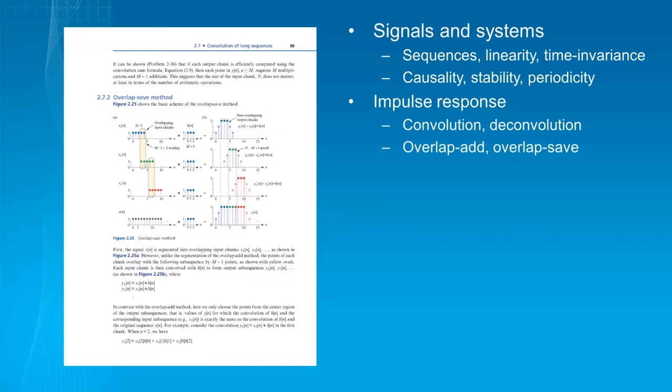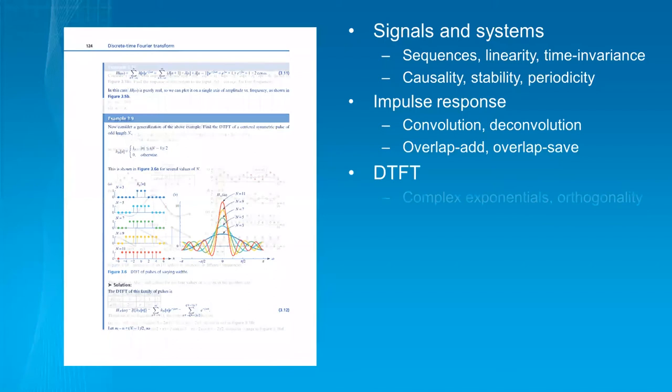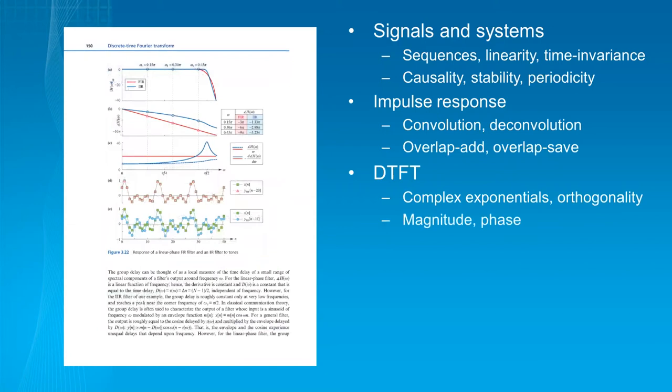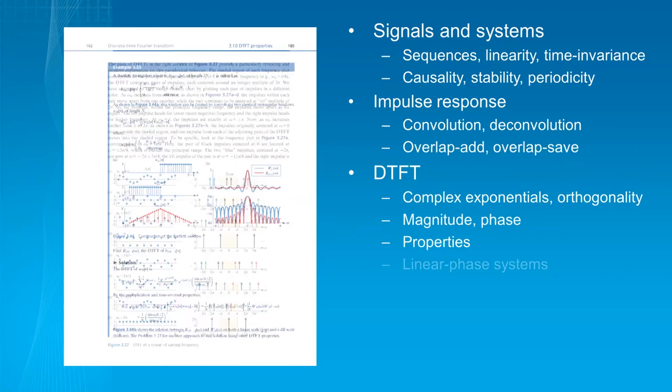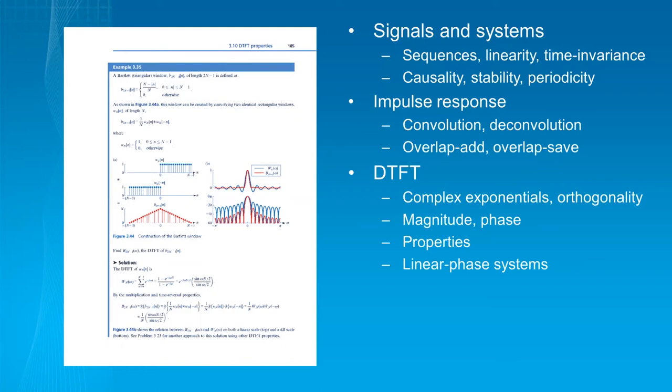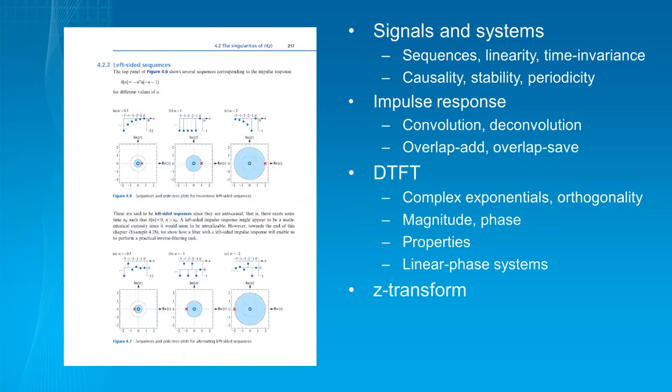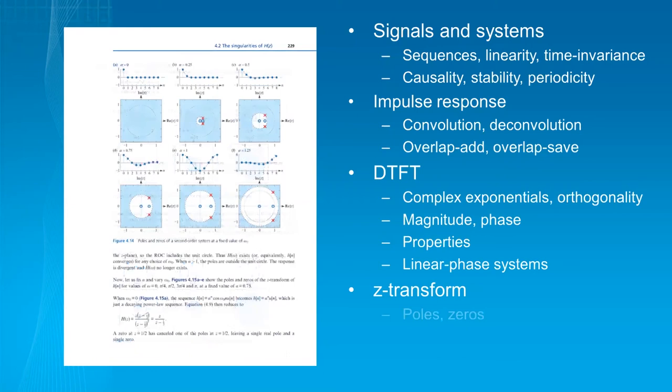Next chapter is DTFT: complex exponentials, response to cosines, difference between FIR and IIR filters, magnitude and phase, and a ton of stuff on the properties. Linear phase systems show up here and in three other chapters, because it's a very important topic, which I felt necessary to cover multiple times. Next chapter is Z-transforms, which includes pole-zero plots, inverse transforms, and the like, all the properties.